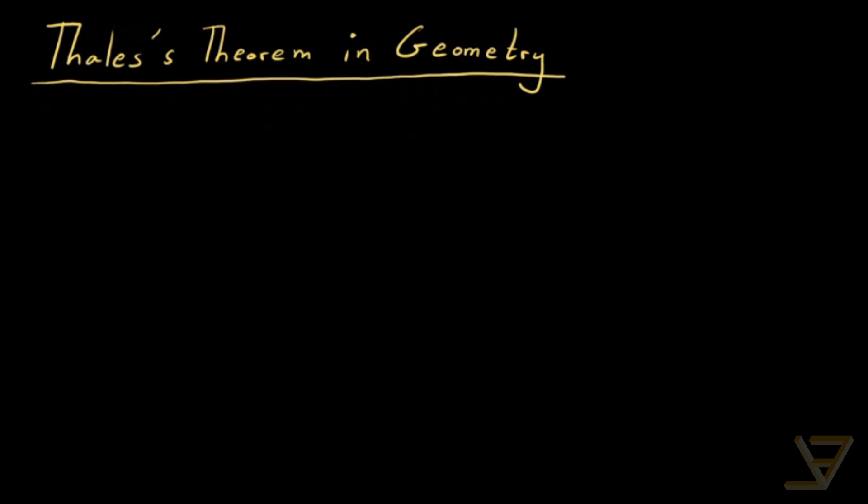What we're going to be proving is that if A, B, and C are points on a circle, then we have the following biconditional result: angle ACB is equal to 90 degrees if and only if AB is a diameter.